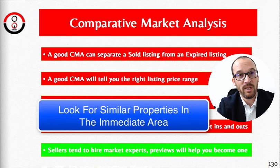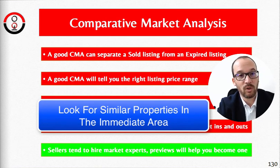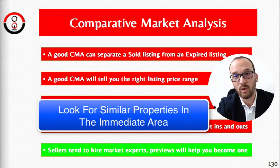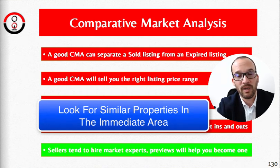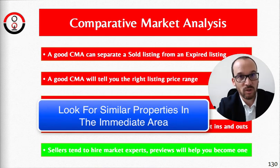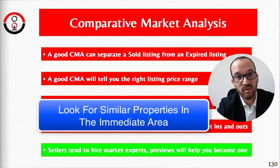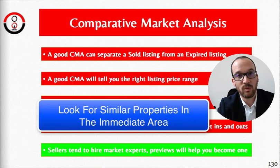To do it correctly, you need to find three active listings in the system that are similar to the house you're going to list. Your goal is to find similar homes. If you're listing a ranch, three bedroom, one bath, don't look for a colonial three bedroom, three bath — look for ranch, three bedroom, one bath in the same town. If you can't find one there, go to the next town.